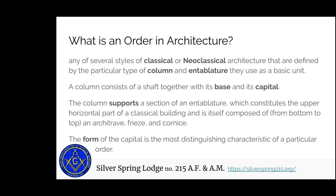An order in architecture is several styles of classical or neoclassical architecture defined by the column and entablature — the horizontal — used as a basic unit. The column itself has a base at the very bottom and a capital at the top. The column supports the entablature, which is the upper horizontal of a building, composed of an architrave, a frieze, and a cornice. A lot of the variety in buildings comes from the top of the capital — that's what distinguishes each one of these forms.